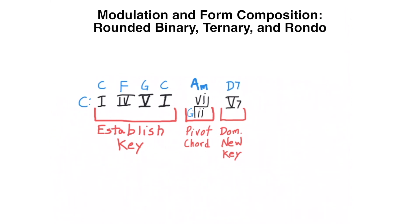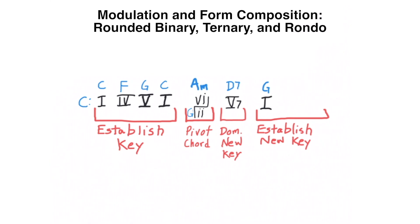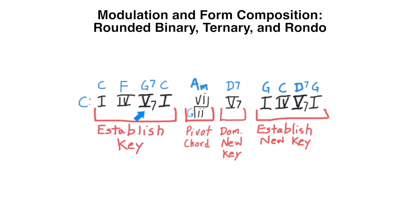Now we'll finish off this progression by establishing the new key, beginning with a 1, moving on to a subdominant function — either 4 or 2 — moving on to a dominant function, either 5 or 7, and finally back to 1. Now to strengthen the resolution back to 1, I will take each of the five chords and turn them into 5-7, also known as dominant 7 chords. Here is the sound of this progression.